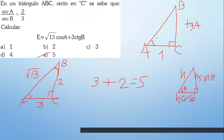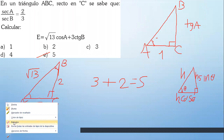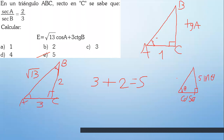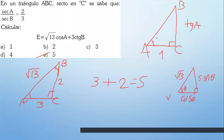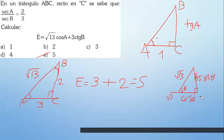¿Qué es lo que tenías allí? Tenías raíz de 13. Puse raíz de 13 en vez de poner H. Raíz de 13 por coseno de A. Coseno de A era 3, por eso puse 3. Si lo ves de esta manera, puedes hacerlo mucho más rápido.